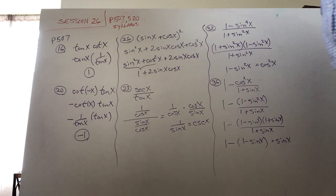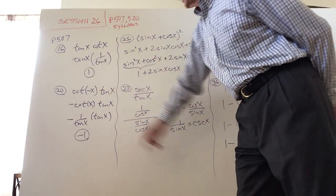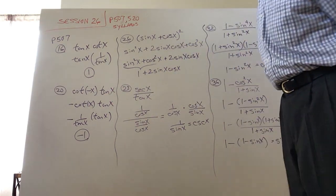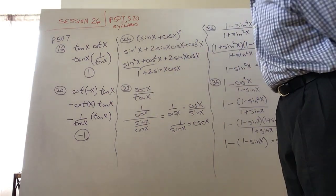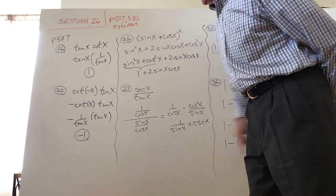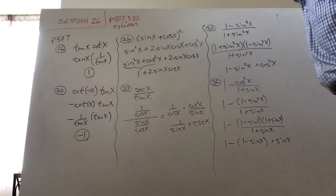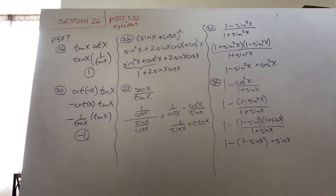The cot of negative x is the same as negative cot x, and then the same thing occurs here as above. I change cot to 1 over tan and multiply those, getting negative one as the answer for number 20.